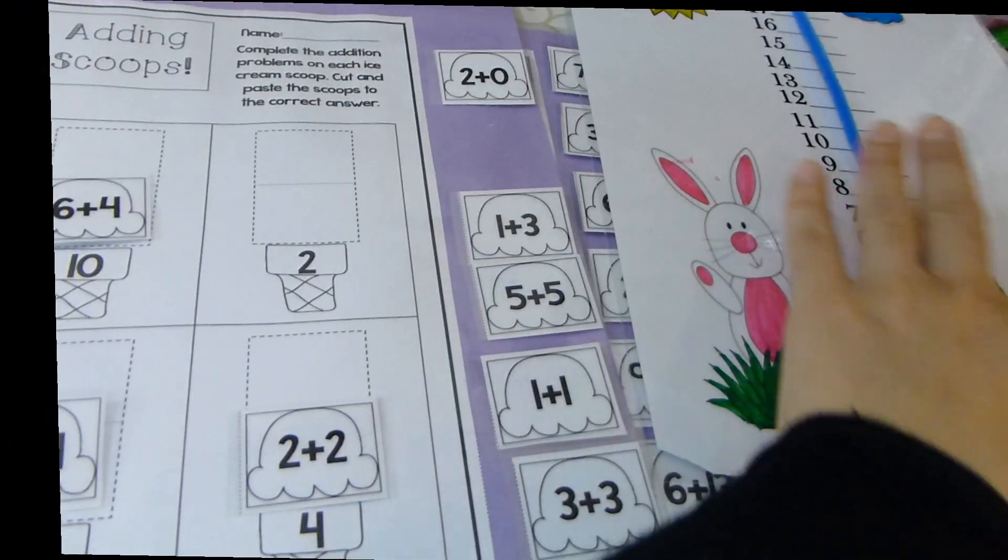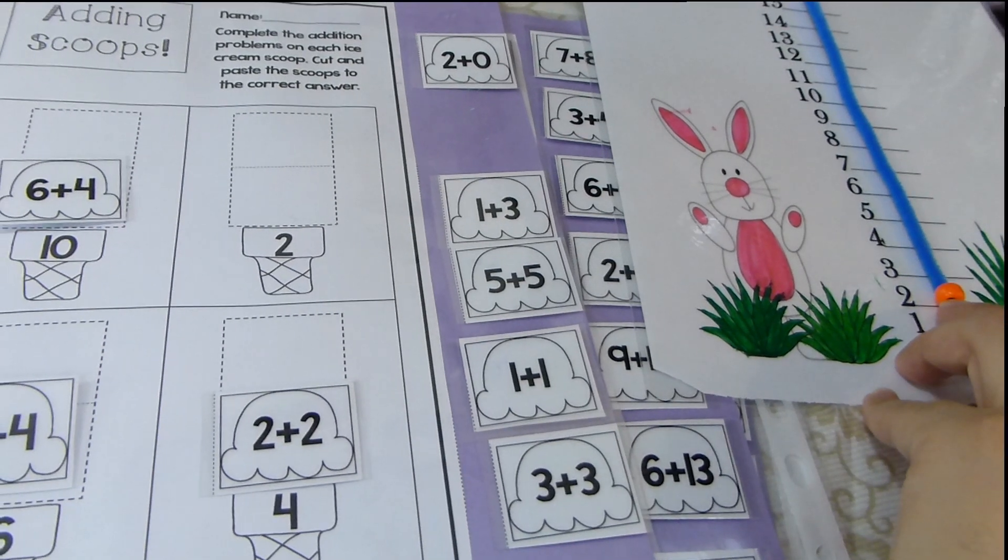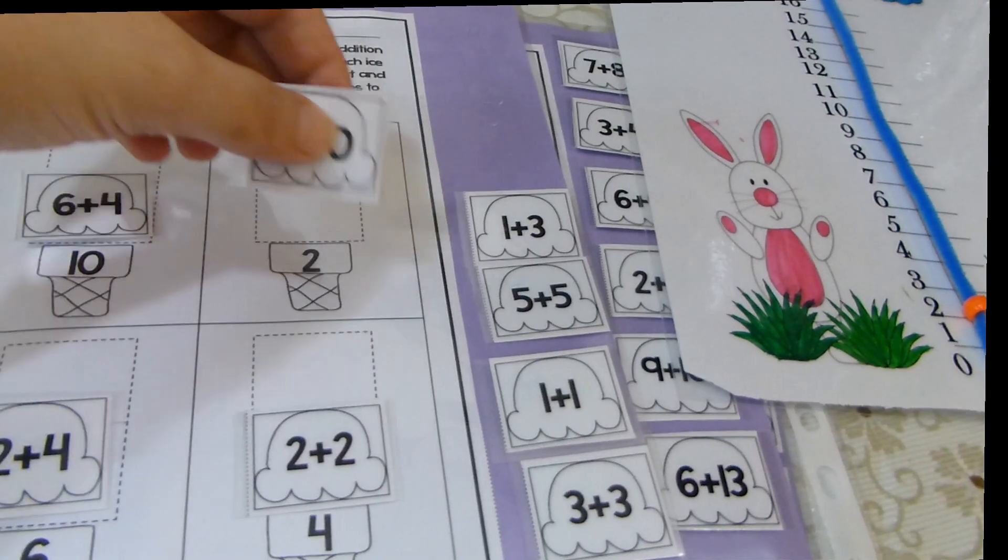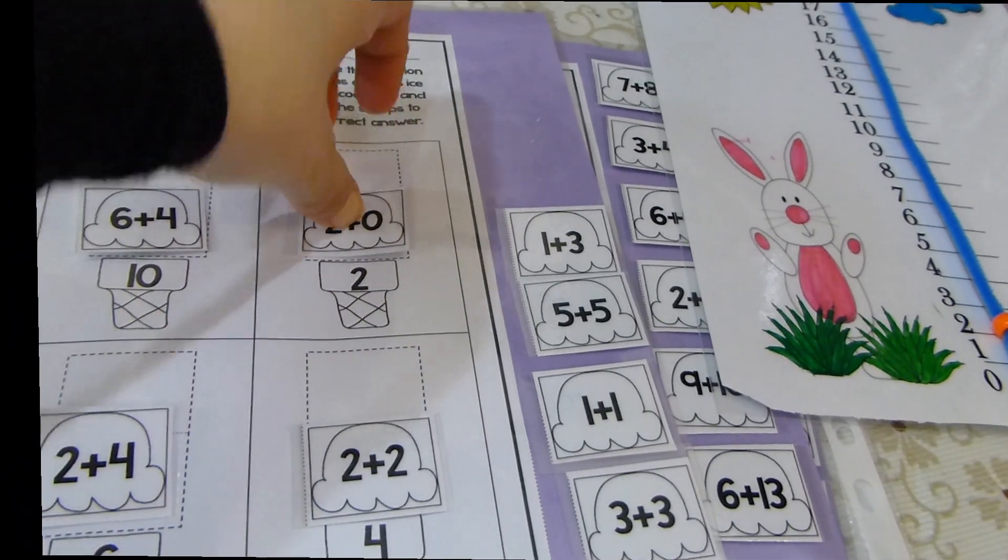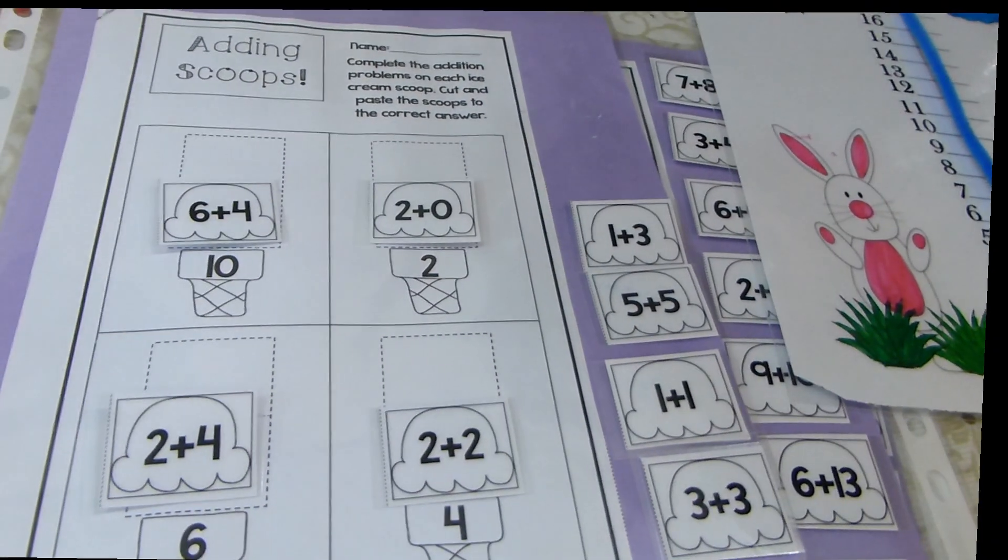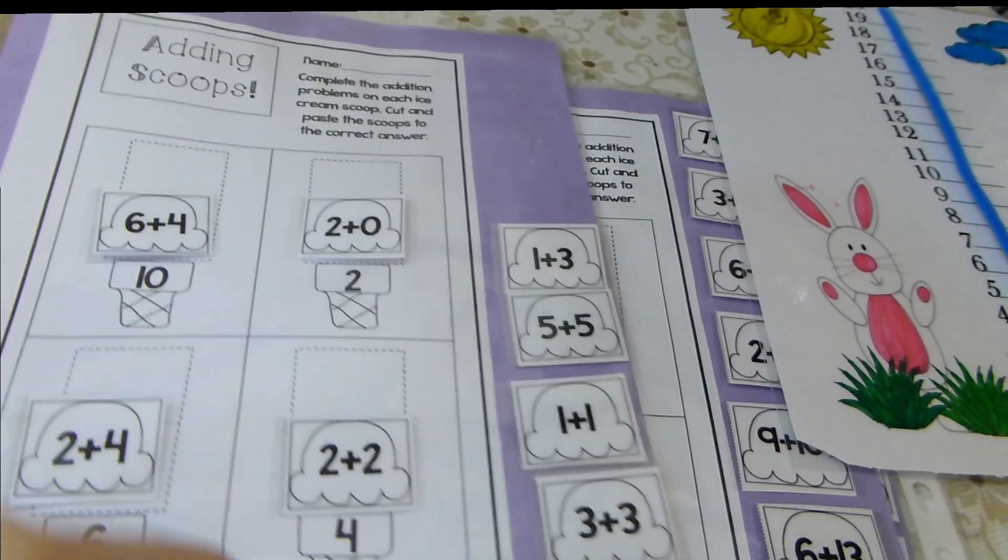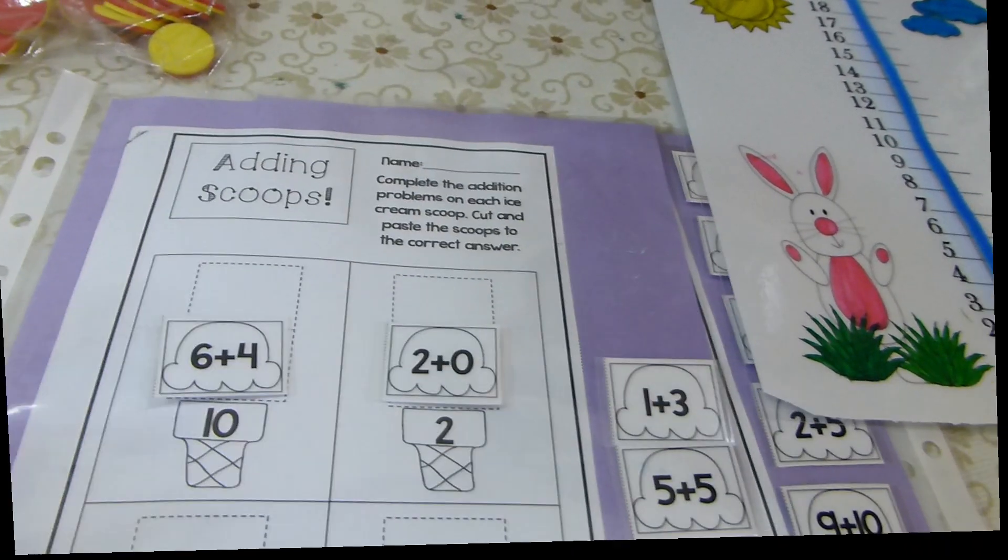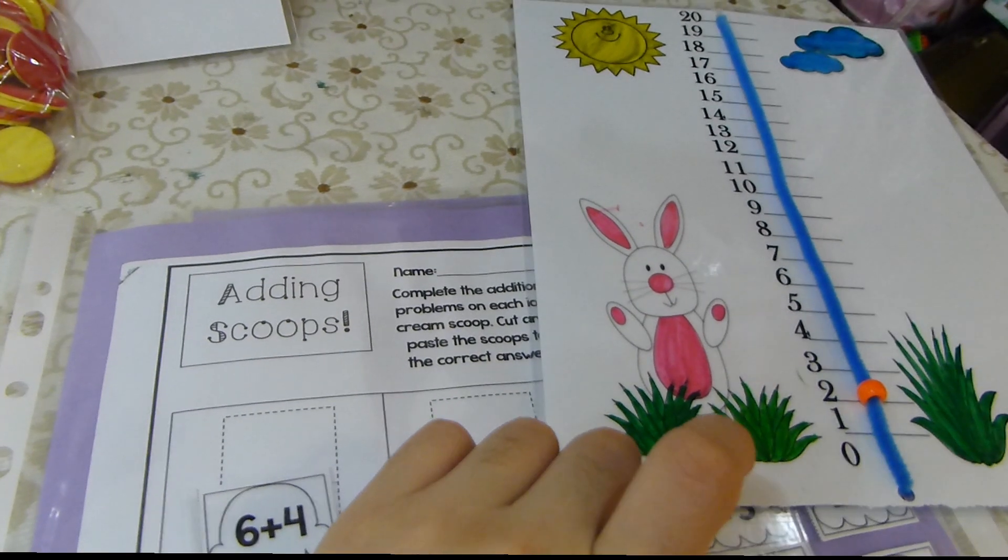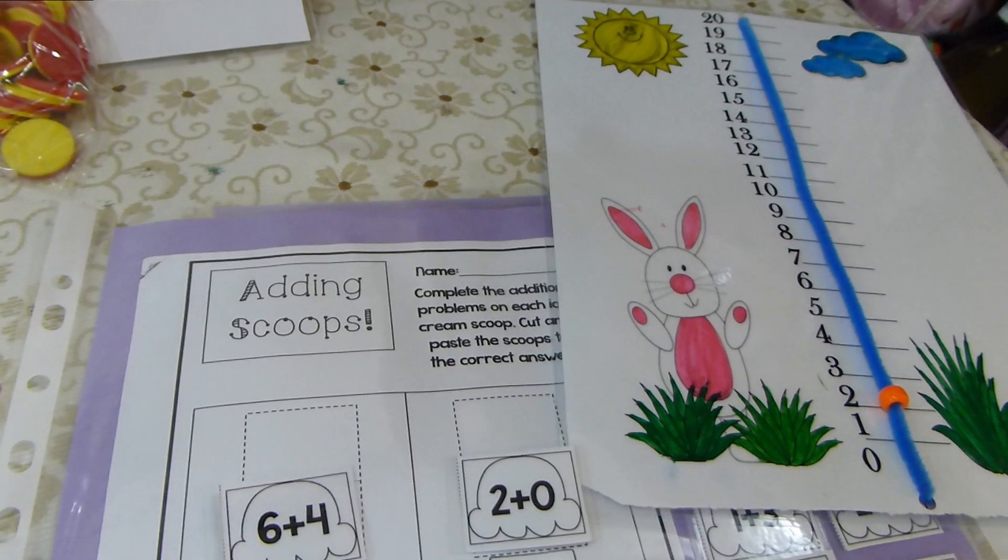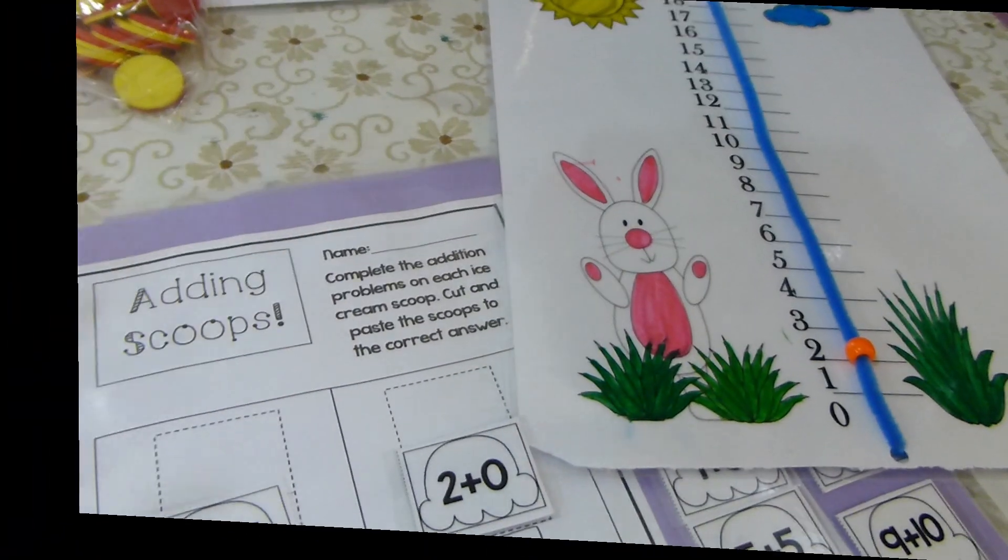He will take this and find number 6 and put it down here. 2 plus 0. It will go to number 2 again. This is number 2. And then because it's 0, the bead will not move forward anymore. So the scoop goes with number 2 ice cream. In this printable, you will find 1, 2, 3, 4, 5, 6 pages. You can use this one too. I'll link it below with any other kind of printable or games that I showed you before.